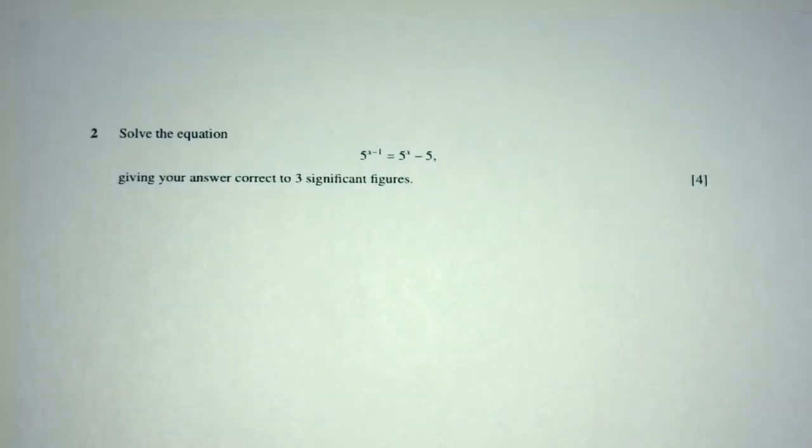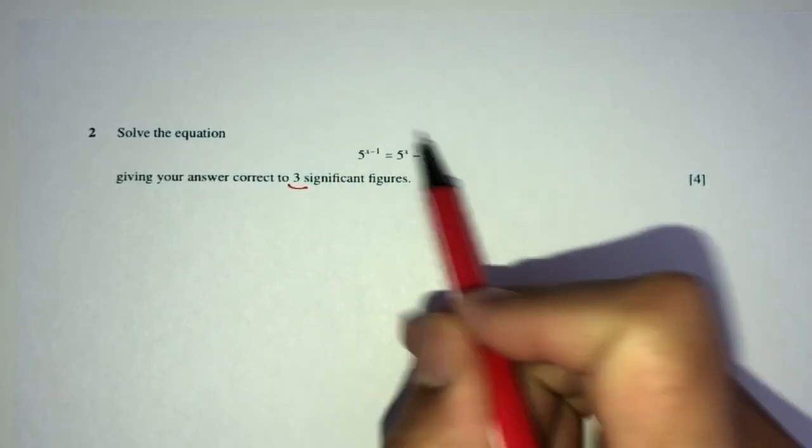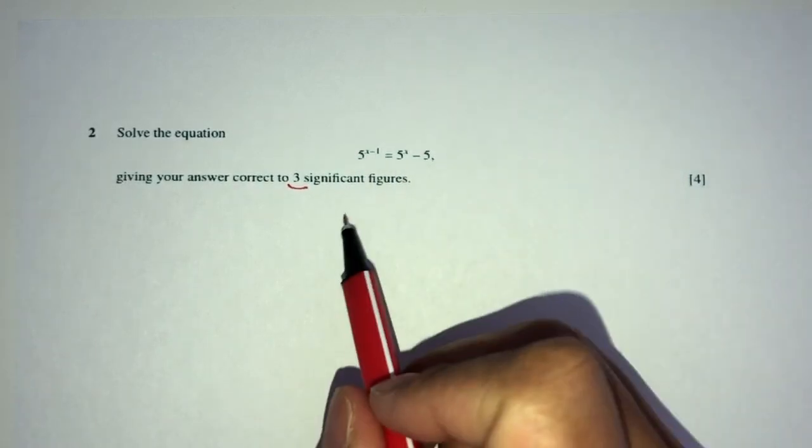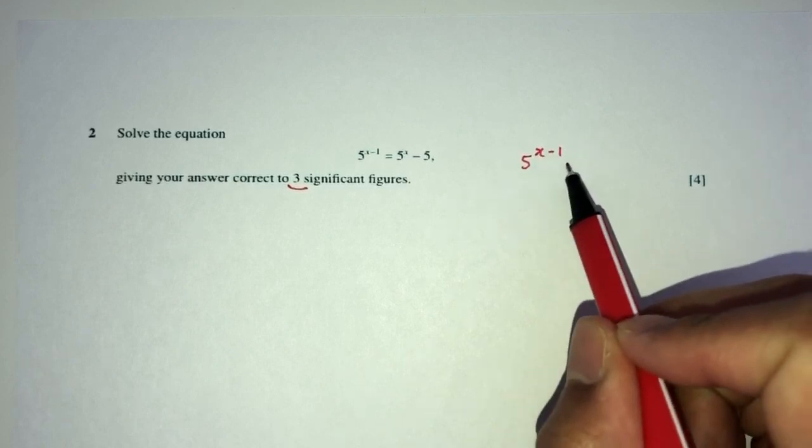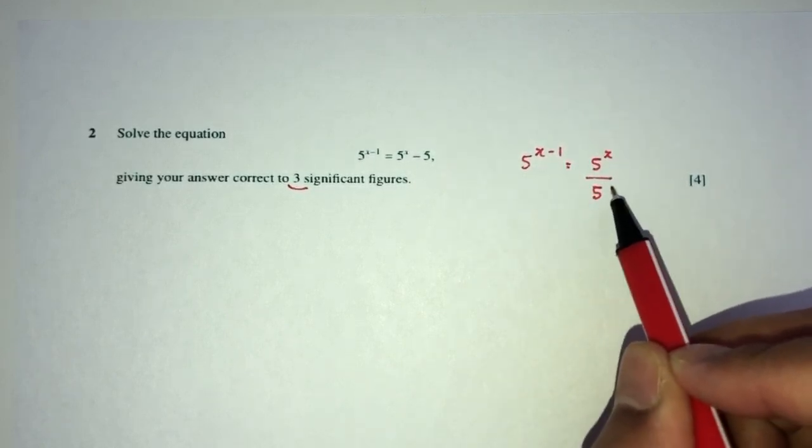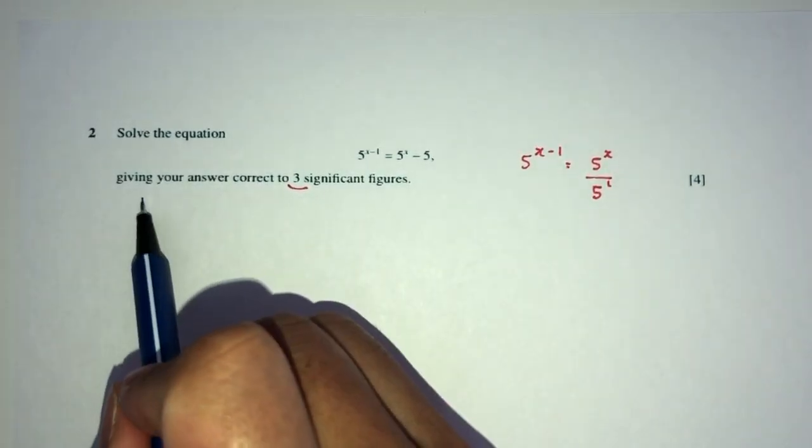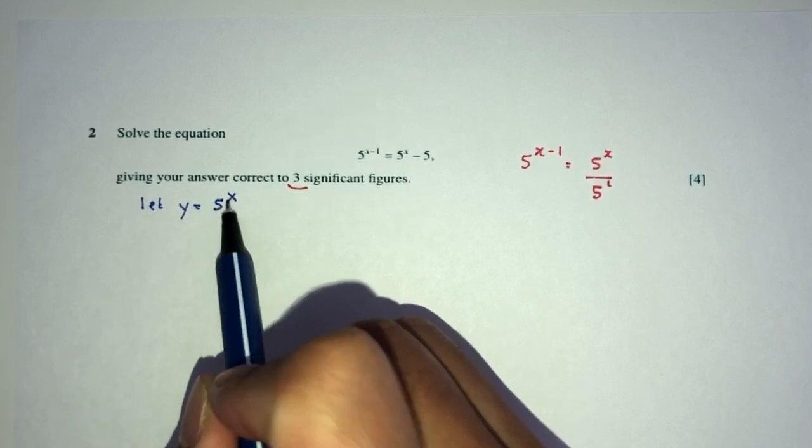Now, let's move on to question number 2. We have to solve the equation, which means finding the value of x to 3 significant figures. So how can we simplify these ones? Well, I have 5^x here. So we have 5^(x-1), what is that? It is simply 5^x divided by 5^1. Now, one thing I can do for now is let y equal to 5^x to begin with.